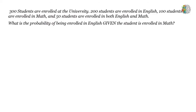Let's look at this conditional probability example. 300 students are enrolled at the university. 200 students are enrolled in English, 100 students are enrolled in math, and 50 students are enrolled in both English and math. What is the probability of being enrolled in English given the student is enrolled in math?